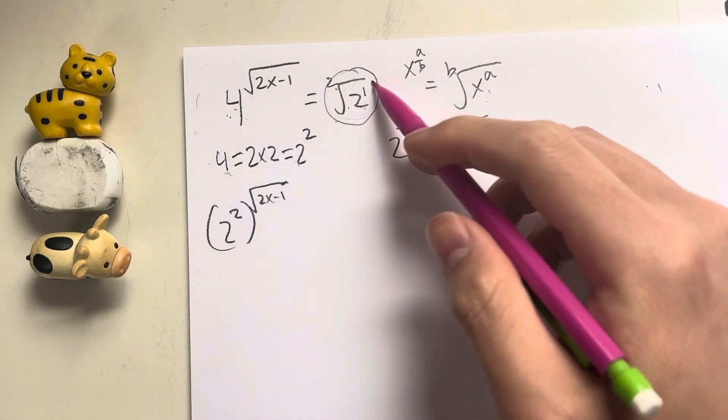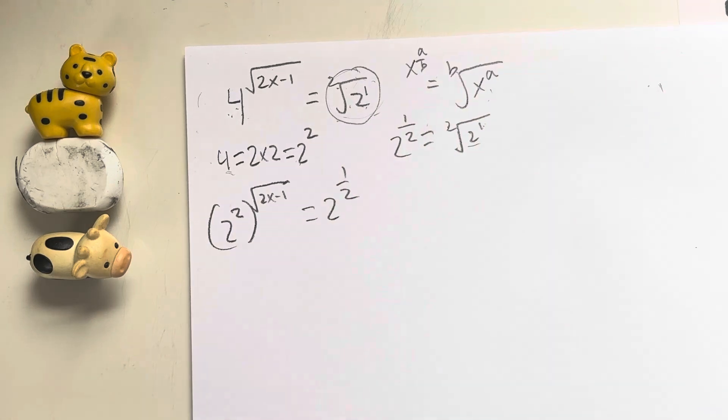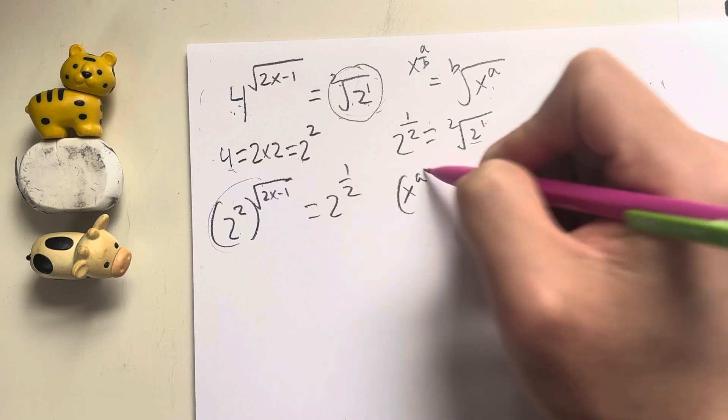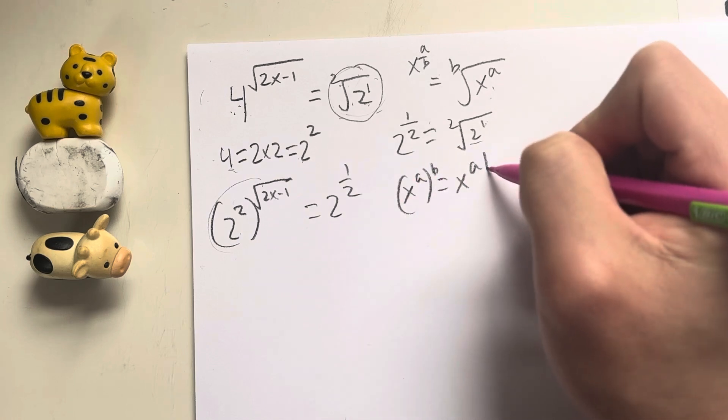So technically, the square root of 2 is equal to 2 to the 1 half power. Now, distributing this, because I have to remember this rule: x to the a to the b is equal to x to the a times b.